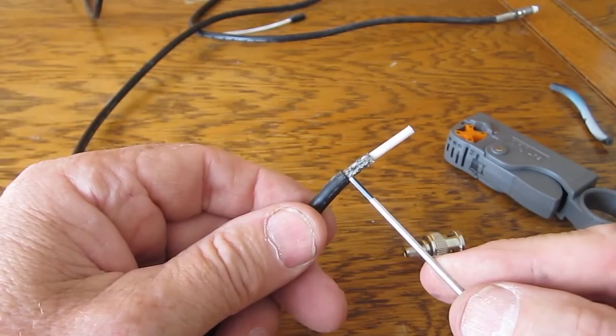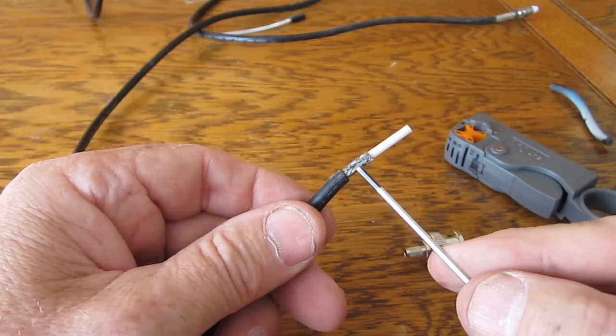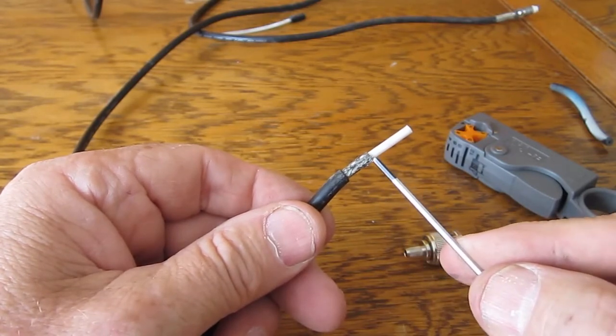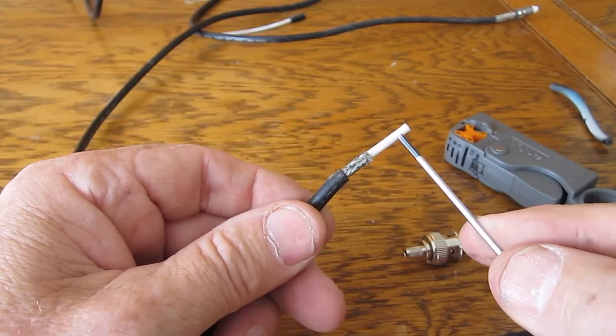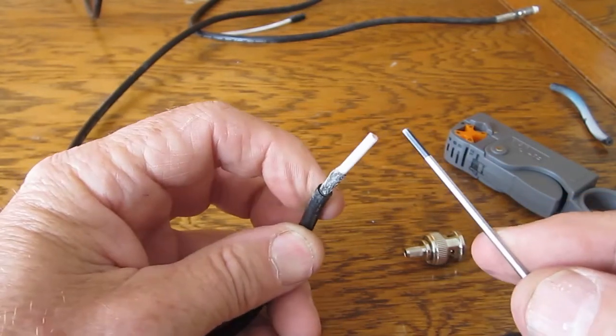We have perfectly stripped coaxial cable. There's the black outer, there's the braid, and there's the dielectric and the center conductor.